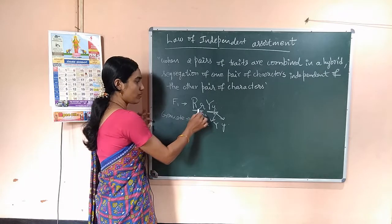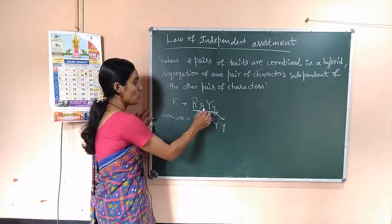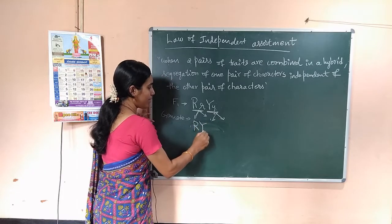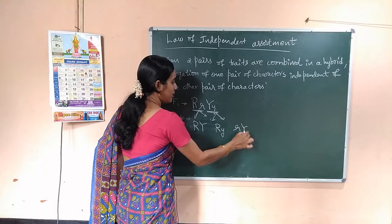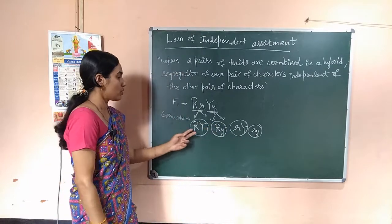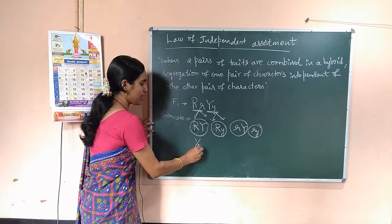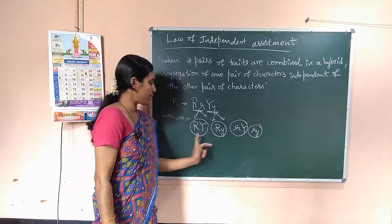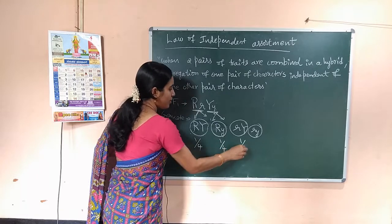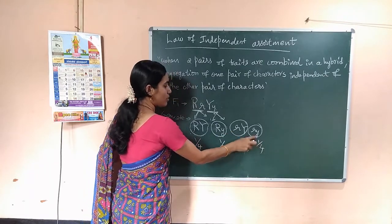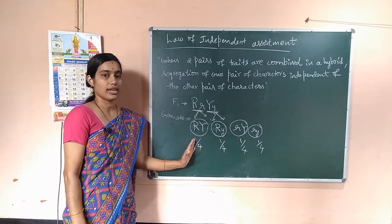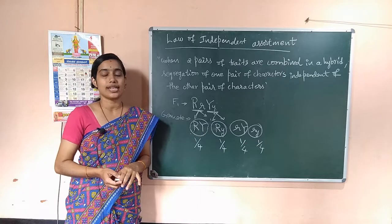Because of this independent assortment of two traits in a hybrid, you get four gamete combinations: RY, Ry, rY, and ry — each with a 1/4 probability. Capital R capital Y has 1/4 possibility; capital R small y has 1/4; small r capital Y has 1/4; and small r small y has 1/4. This is the meaning of the law of independent assortment.